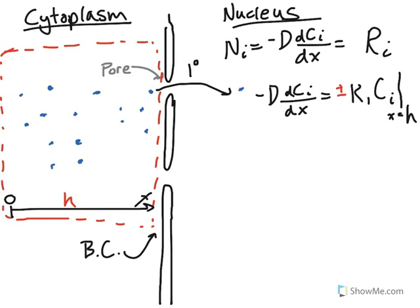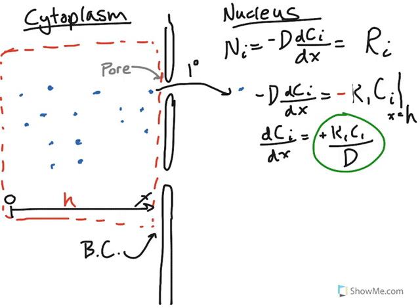Is this positive or negative? Let's see what happens if we say it is negative. If it's negative, then dividing both sides by the negative diffusion coefficient D gives us dCi/dx equals K1·C1 divided by D, and it's positive because a negative divided by a negative gives a positive. This is saying that we should expect a positive concentration gradient — in other words, as we move in the positive x direction we should expect to see an increasing concentration of this species.